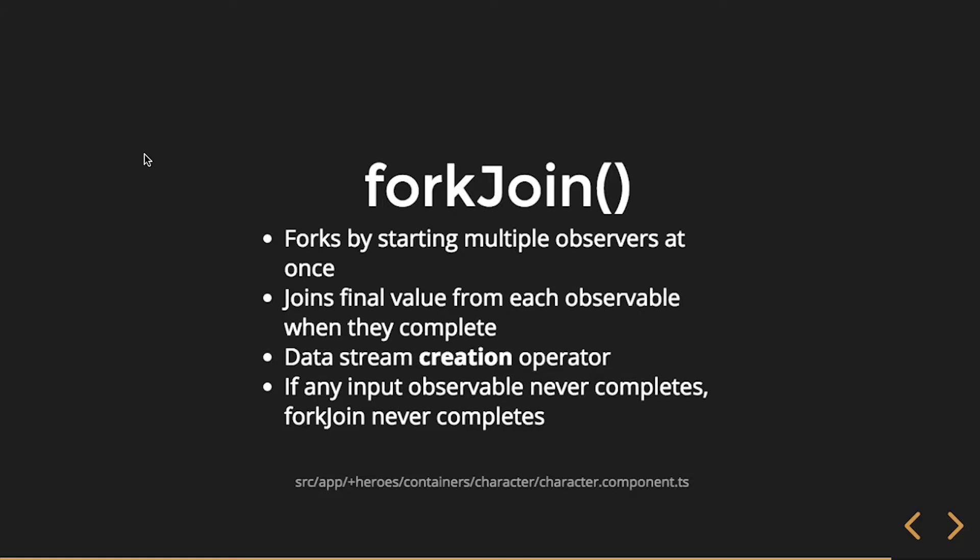So forkJoin — I like to think, when I've talked to people about RxJS, I kind of like to equate forkJoin to Promise.all. So if you're used to promises and you're like, I have a variable number of promises and I don't want the values from all of those until they've all been fulfilled — this is the RxJS or the observable version of Promise.all, which is forkJoin.